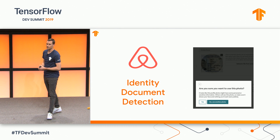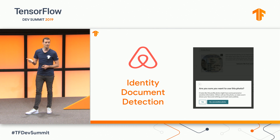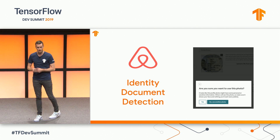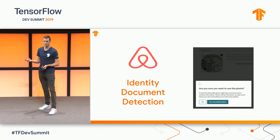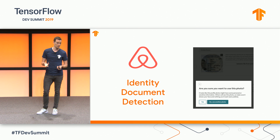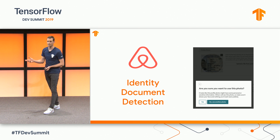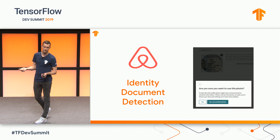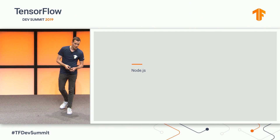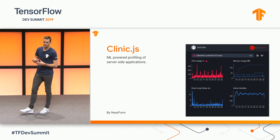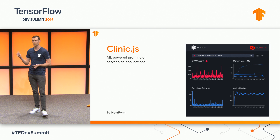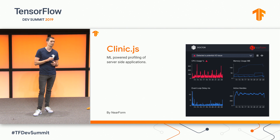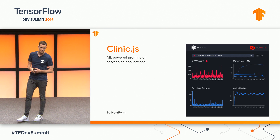Airbnb built an identity document detection model as a full TensorFlow ecosystem solution. On your Airbnb profile, if you were to upload a government-issued ID, it's a very big trust and safety issue. The trust team at Airbnb built a TensorFlow model to detect if a profile picture you're trying to upload in the client contains a government-issued ID. They use this in the browser using TensorFlow.js as well as on their mobile devices with TF Lite. On Node.js, a good example is ClinicDoctor and ClinicJS, a Node.js performance analysis tool that uses our Node.js bindings to filter out GC spikes and give a true accurate CPU performance benchmark.